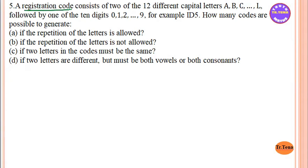The registration code consists of two of the 12 different capital letters: A, B, C, D, E, F, G, H, I, J, K, L — followed by one of the 10 digits. How many codes are possible to generate?